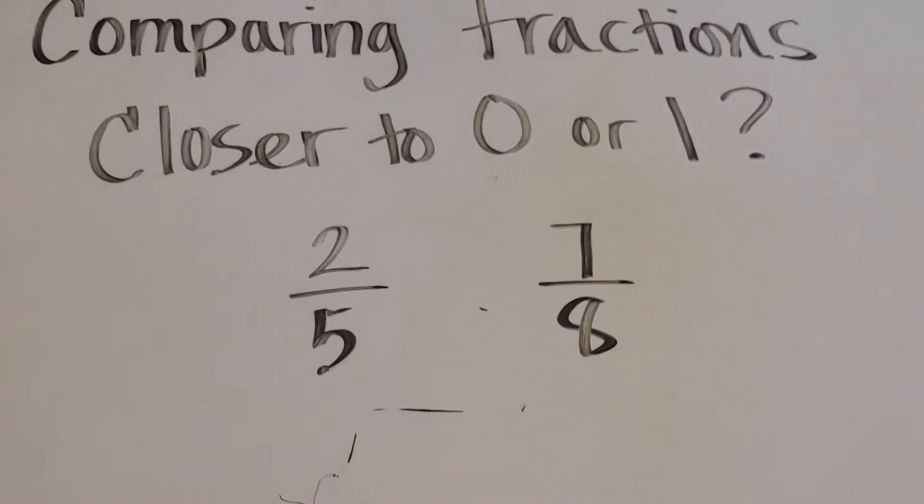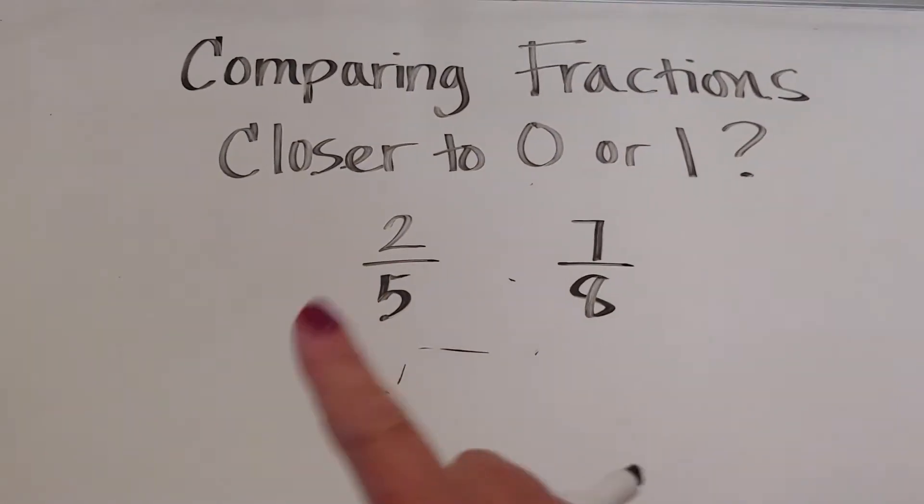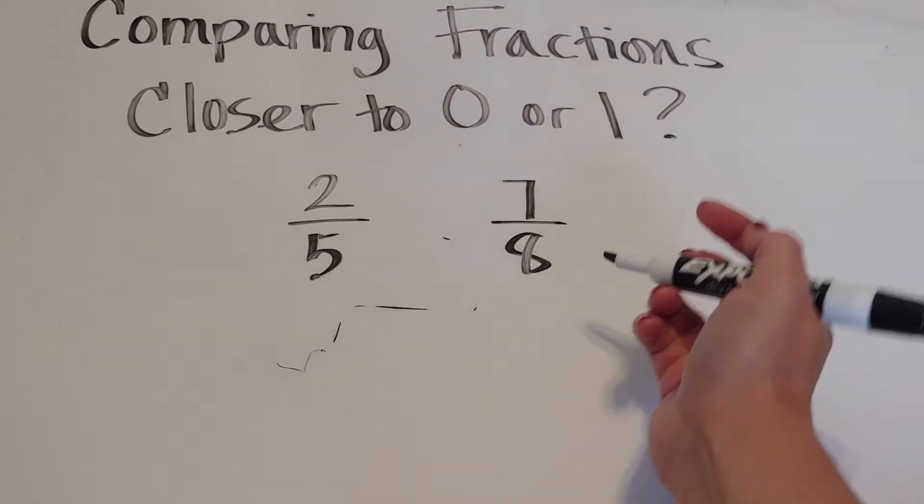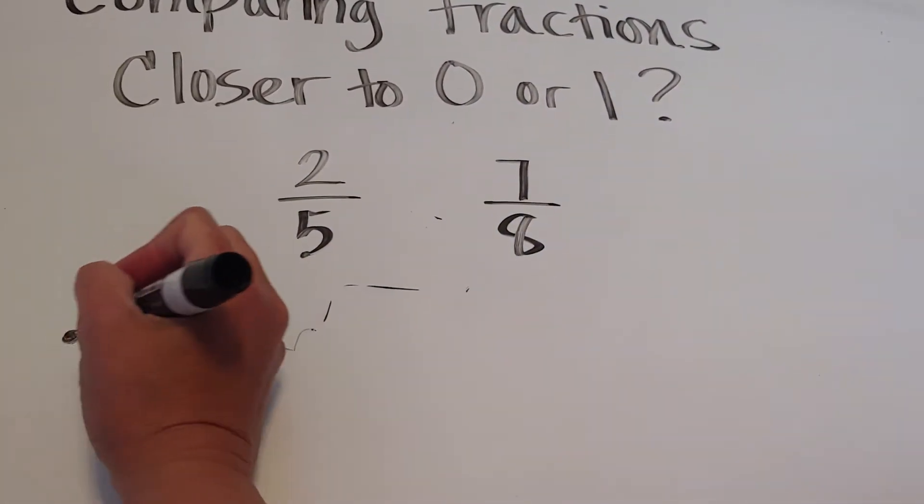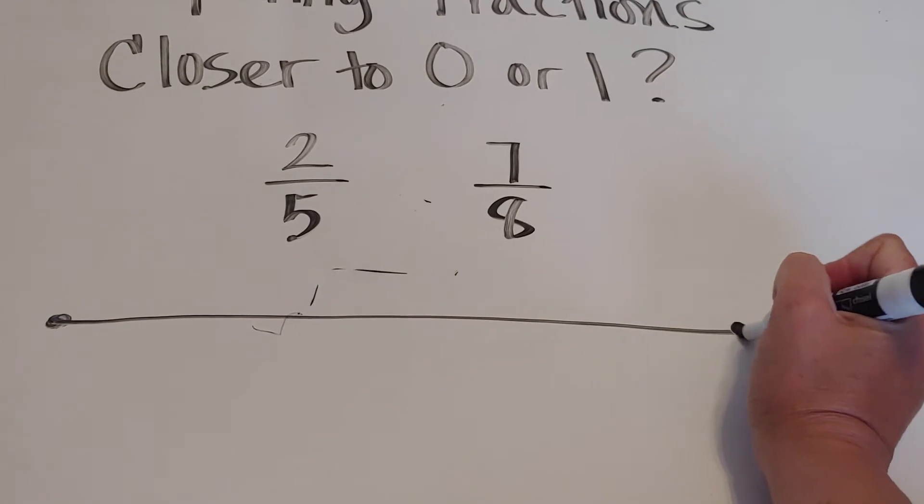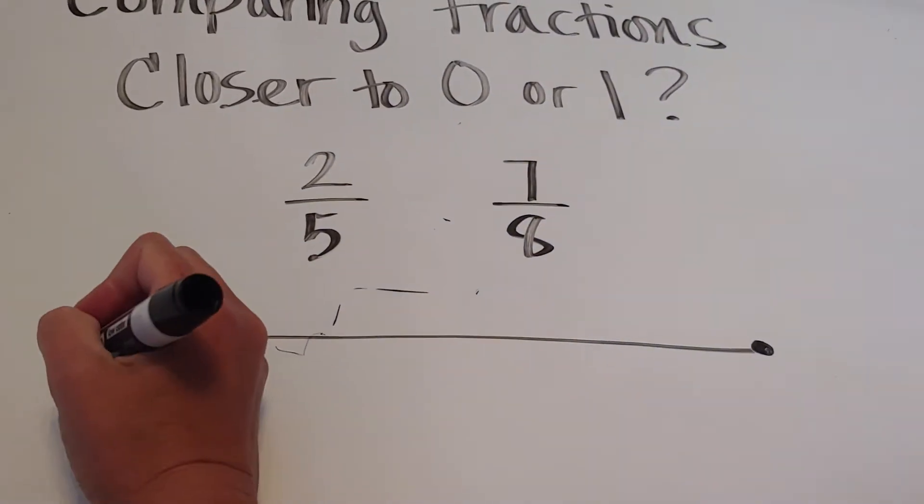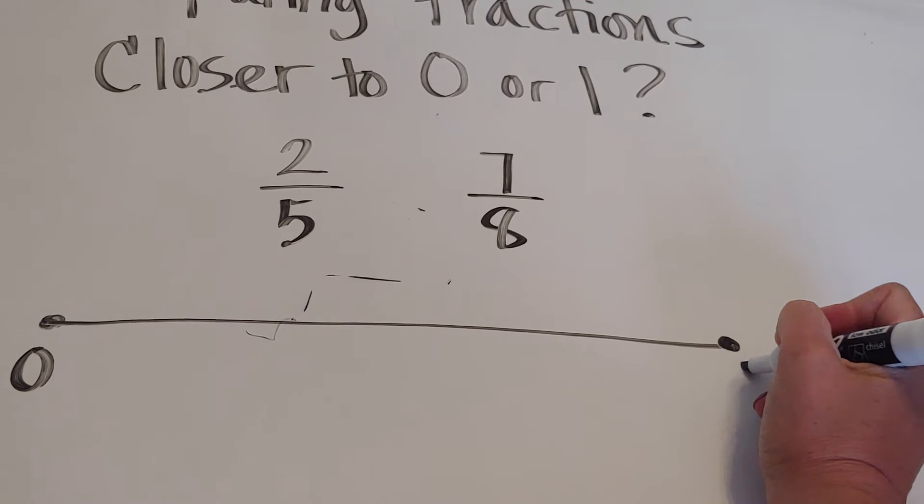One of the ways you can do this is using the closer to zero or closer to one method. Let's start with seven eighths. I'm going to have a line, and we're going to let this represent zero and this represent one.